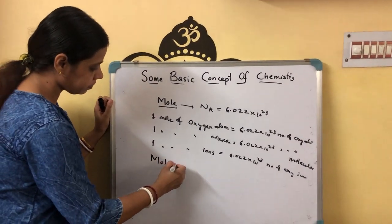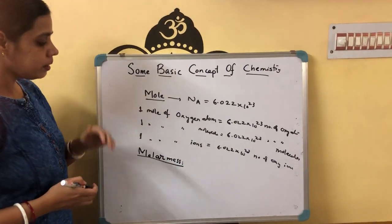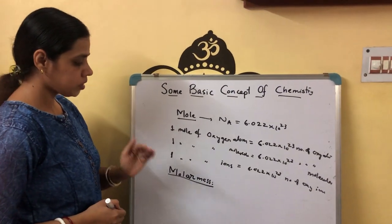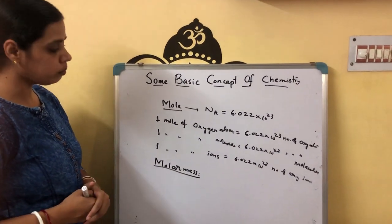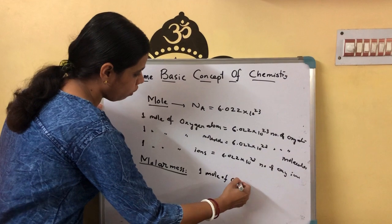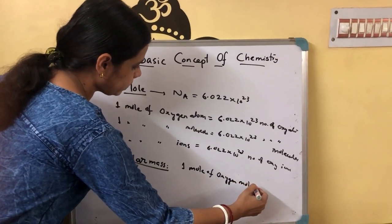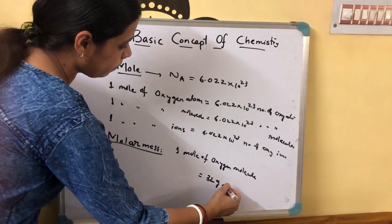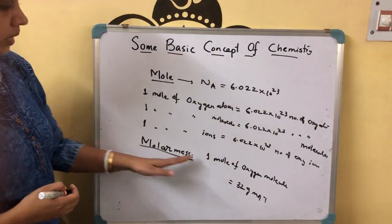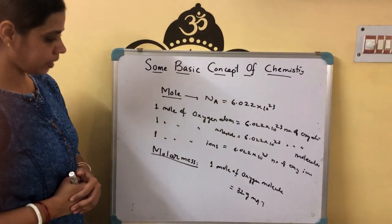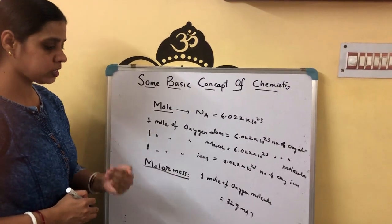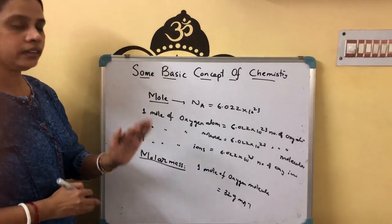Now I will explain molar mass. What is molar mass? The mass of one mole of atoms or one mole of molecules is called molar mass. When I write one mole of oxygen molecules, it is 32 gram per mole. When writing molar mass, note that the unit is gram per mole. That means within 32 grams, one mole — that is, Avogadro's number — of oxygen molecules are present.